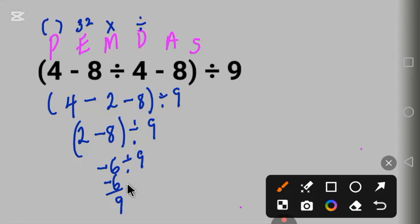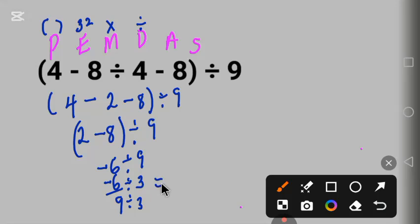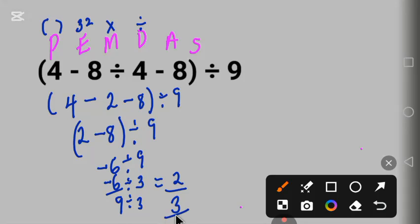The GCF is 3. So we divide: 6 divided by 3 gives us 2, and 9 divided by 3 gives us 3. So the simplified answer is negative 2 over 3. That is the correct answer. Thank you for watching — please subscribe to my channel.